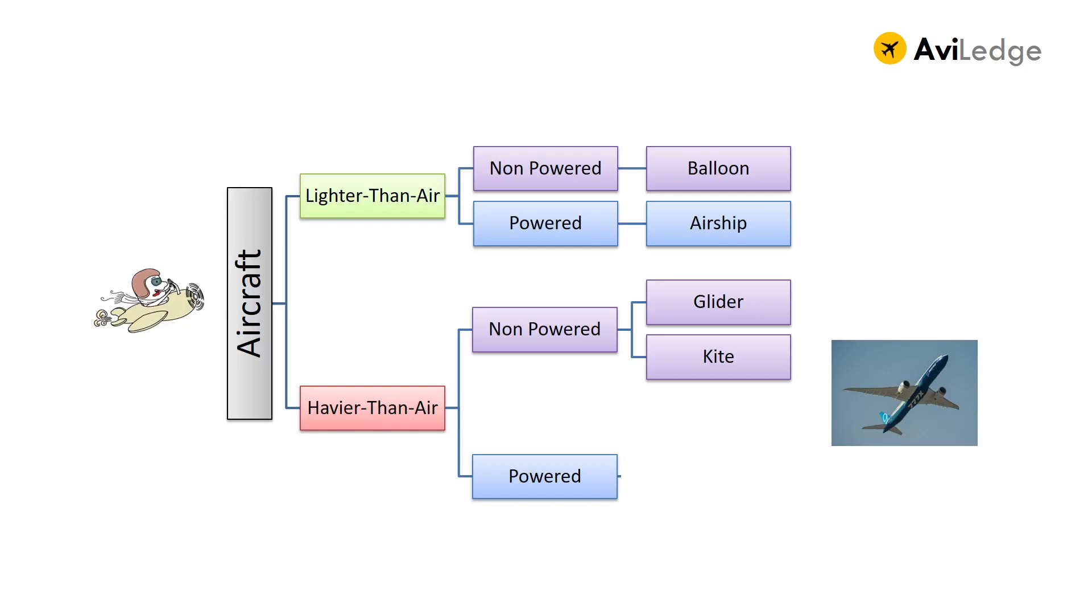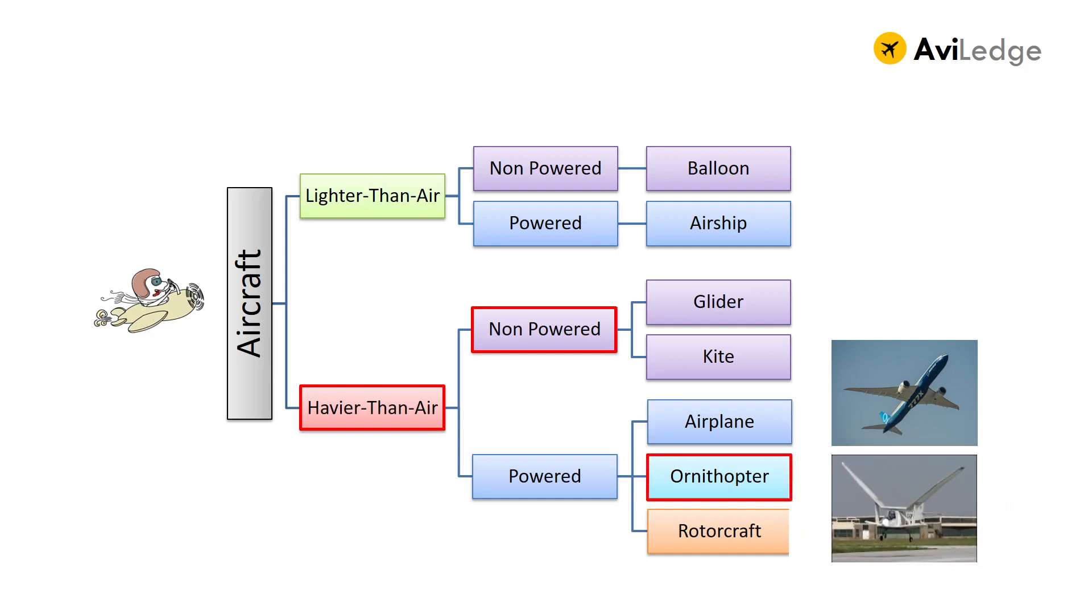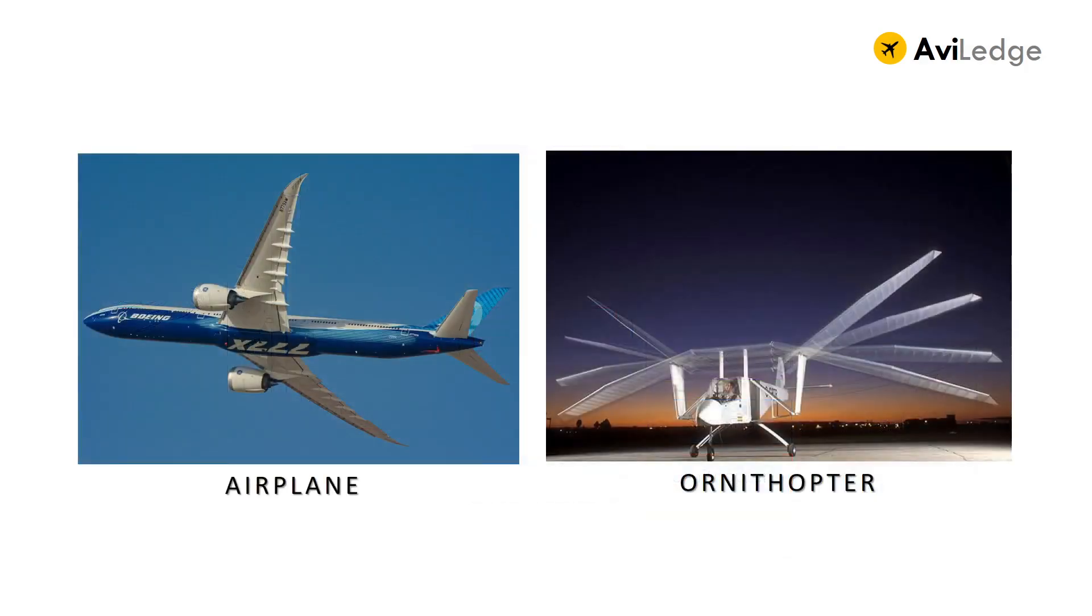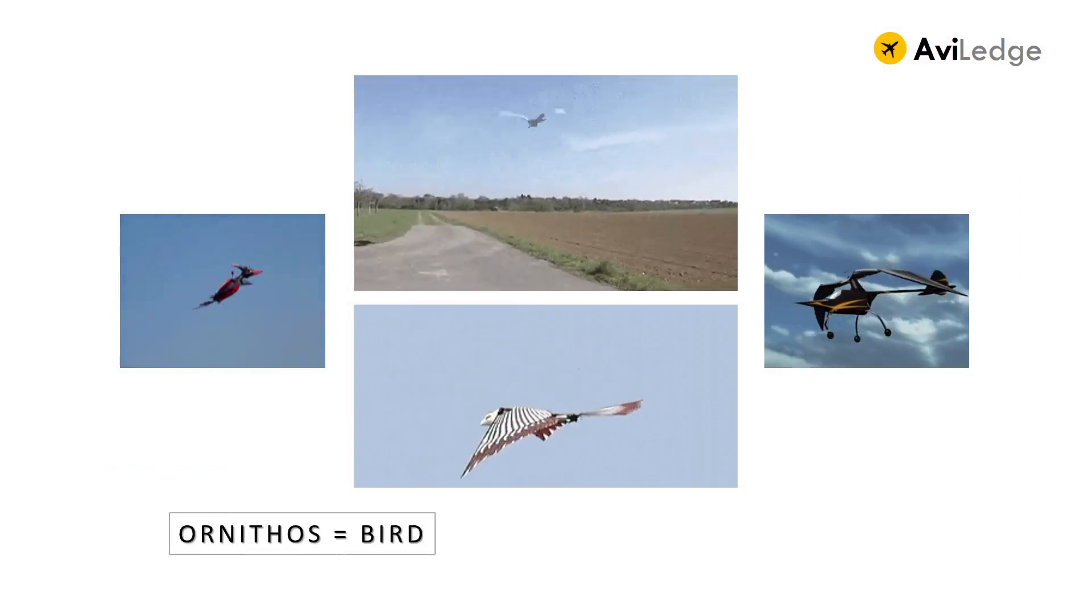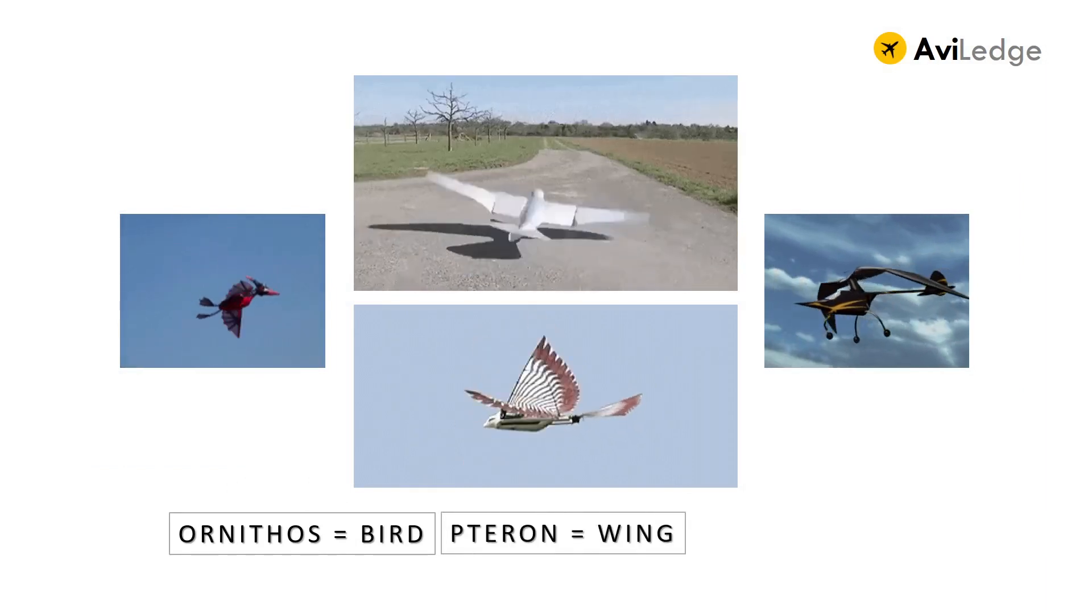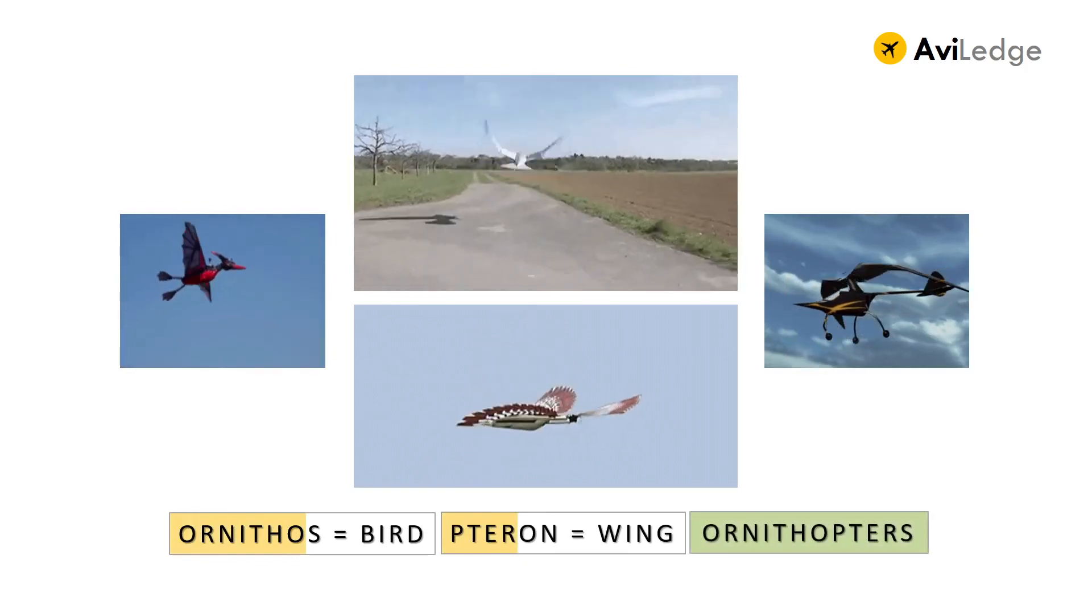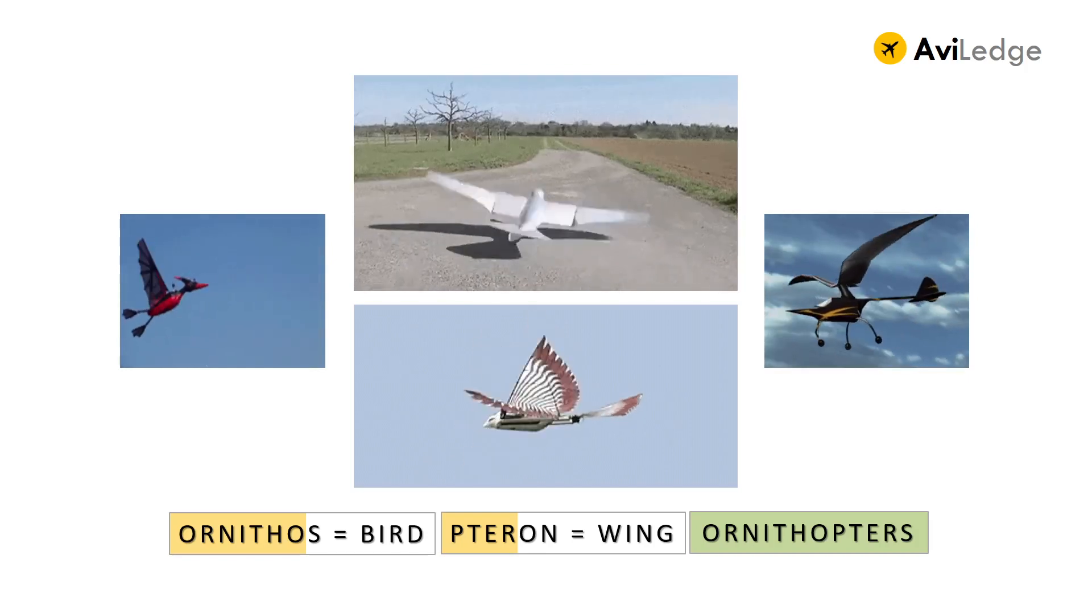Next, in the heavier-than-air powered category comes the longer-awaited what we are waiting for, airplane, along with the ornithopter and rotorcraft. Airplane includes any fixed-wing aircraft with engines which you see in commercial roles. Engine provides the thrust for the forward movement. Air flows over the wing creating pressure difference which in turn provides lift to keep the aircraft afloat in the air. Ornithopter is something interesting. It is comprised of two Greek words. Ornithos means birds and patrion means wings. And joining them together makes ornithopter means a machine that flies by flapping wings like birds.